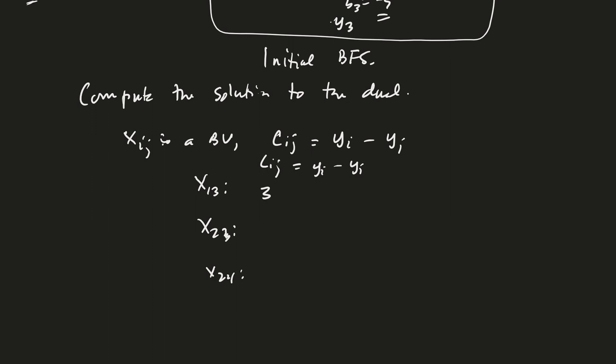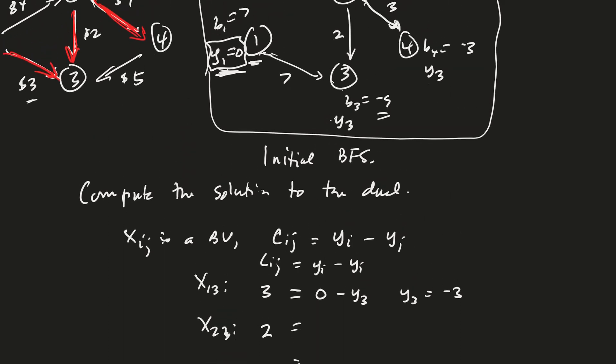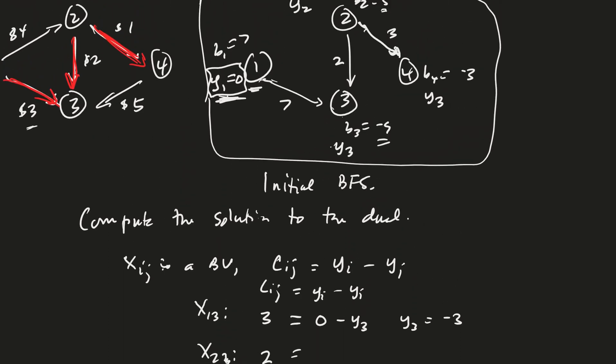So for X1, 3, the cost was, I'm just looking it up here, 3. X2, 3, the cost is 2. And for X2, 4, the cost was 1. Okay. And now this is Y1 minus Y3, so Y1 is 0 minus Y3, so therefore Y3 is equal to minus 3. Good. So up here I could write down that Y3 is minus 3.